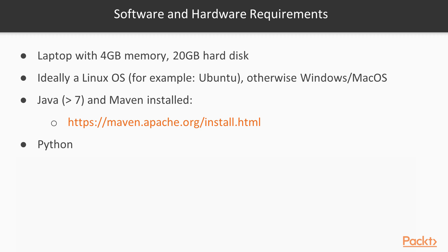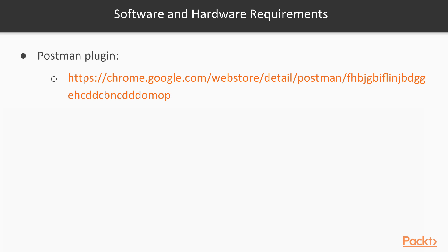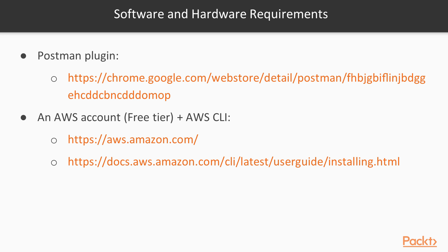You'll also need to install Python, since we will be using it in just a few parts. The code editor we'll be using is IntelliJ, which you can download for free from the provided link. We'll also make use of the Postman plugin for making requests to the services we will be building. Lastly, we'll be deploying our systems in the cloud and we'll be using AWS for this purpose. So make sure you've created an AWS account and downloaded the AWS CLI. Every AWS account comes with a free tier, which means you can use several services for free for a specific period of time. We've made sure that all the services we'll be using fall under the free tier, so as long as you delete the resources at the end of each section, you should be able to complete the course at no additional cost.